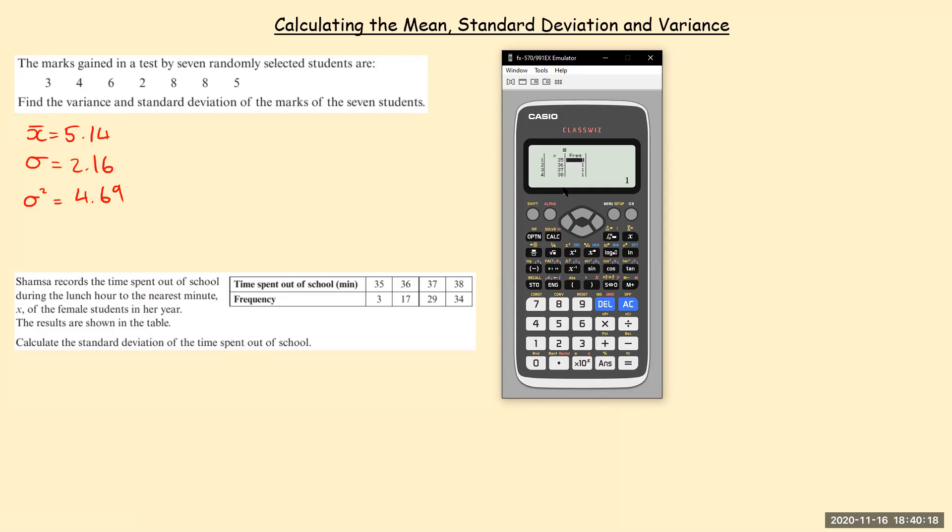It will automatically populate with one. So it'll always get the statistics right if it's a non-frequency table. But if it's a frequency table, you just want to update this. So 35, I've got three, 36 I've got 17, 29 of these, and 34 of that last one.